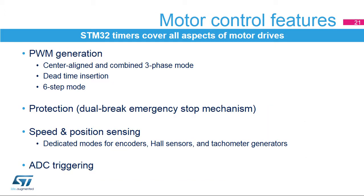This slide summarizes the timer's four main electrical motor control features. The timer includes specific PWM modes for controlling power switches. In addition to center-aligned and combined three-phase PWMs previously described, the timer features dead-time insertion for complementary PWM generation and six-step mode for driving brushless DC motors. It includes power stage protection circuitry with a dual-level emergency stop mechanism to disable the PWM outputs by hardware in case of a fault. It is able to handle the most common sensors found in motor control systems. Quadrature encoders and hall sensors are used for fine and coarse position feedback, while tachometer generators are used for cost-effective speed feedback. Lastly, the timer includes synchronized ADC triggering options necessary to properly manage voltage and current sensing and avoid any acquisition issues due to switching noise in power stages.